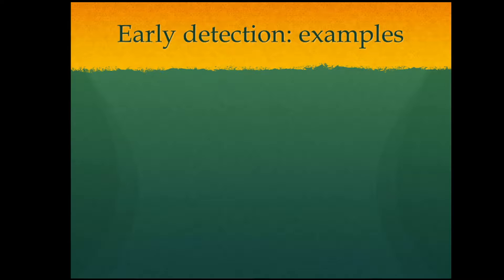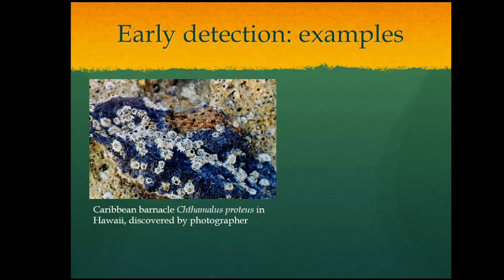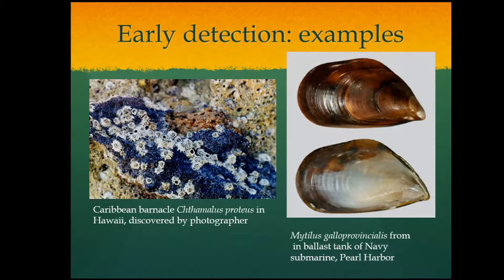For early detection examples: the animal that was the focus of my dissertation work in Hawaii is a small barnacle from the Caribbean that was discovered by a wildlife photographer who was putting together a book on common organisms snorkelers were likely to see. This gives you an idea of how widespread the species was — and no scientists had detected it on the island of Oahu. The photographer sent it to a taxonomic expert who realized what it was.